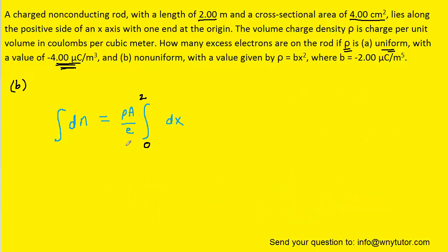Now, on to part B, which essentially is going to be the same thing. The only difference is that ρ is no longer a constant. It varies depending on the length under consideration. So, when we go to plug in ρ into the formula, we're going to have to use this bx².